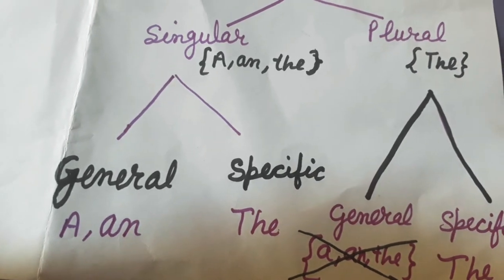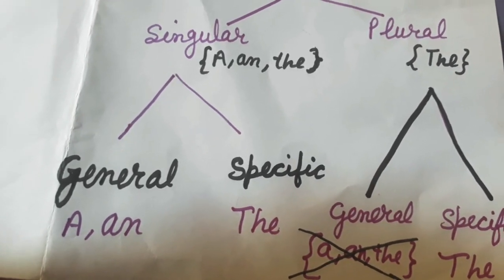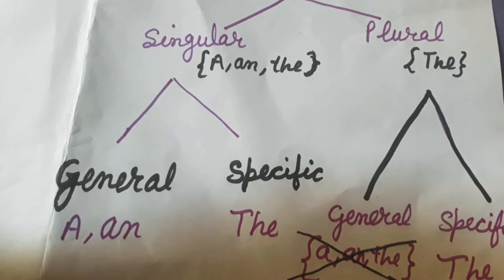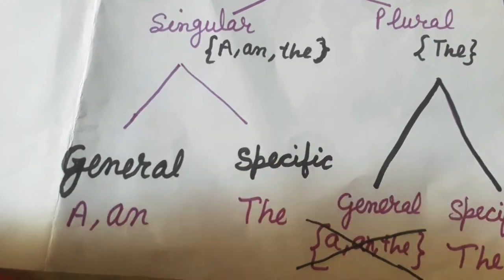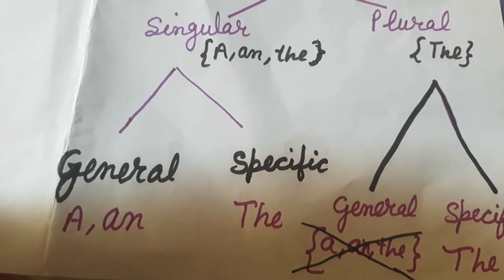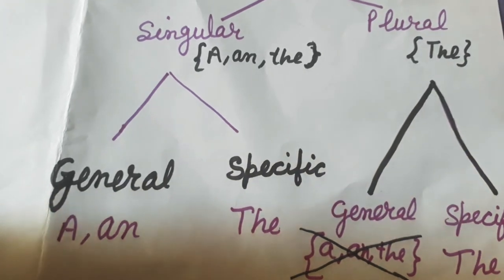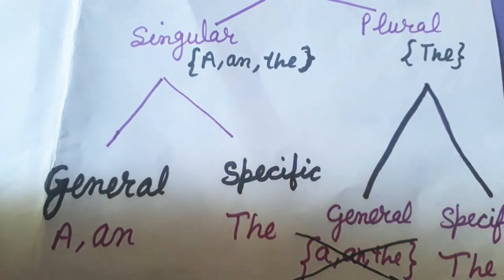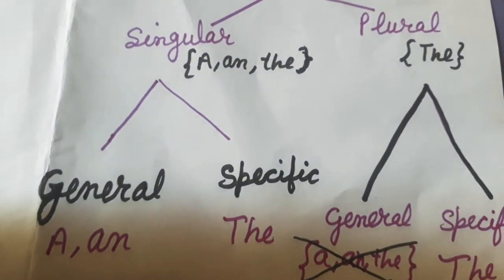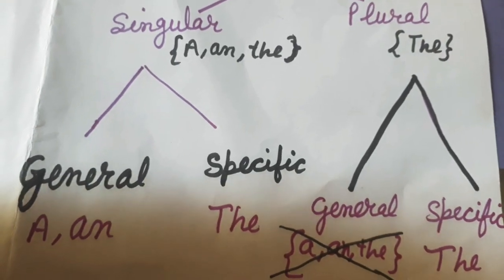Singular noun is divided into two parts: general and specific. In general we only use A and AN. In specific we only use THE. Plural noun is also divided into two parts: general and specific. In general we don't use any article, but in specific we use only THE.